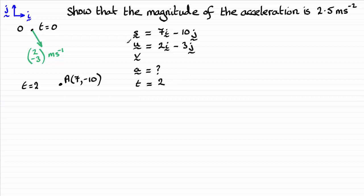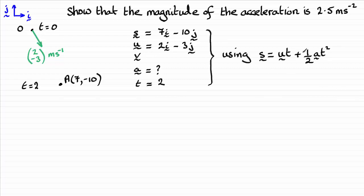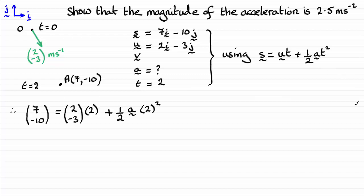Looking at these variables, the SUVAT equation that leaves out the final velocity is S equals UT plus a half AT squared. I've underlined my vectors as you can see. Using this equation, I just substitute my values in: S the displacement equals U times T plus a half A times T squared.